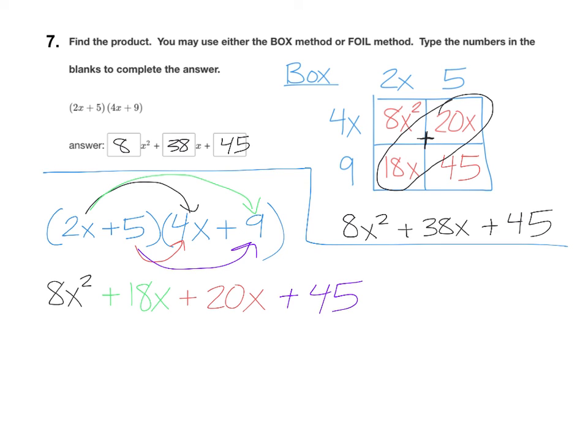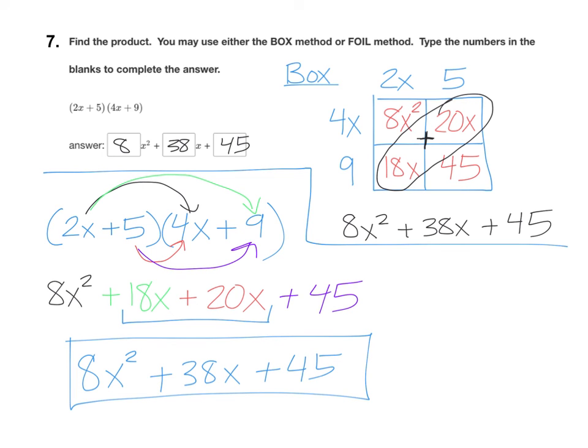Now just combine the like terms together. The 18x and the 20x. 18 plus 20 is 38. So we get the same answer. 8x squared plus 38x plus 45. So you can pick whichever method makes the most sense to you. If you like the box method, go with the box method. If you like FOIL better, you can use FOIL.